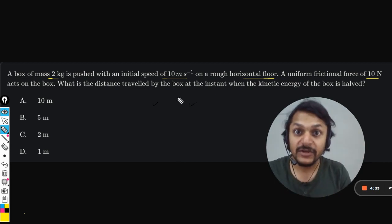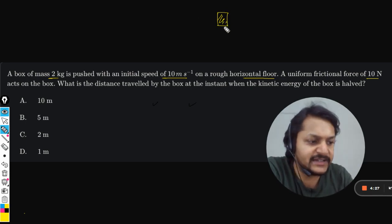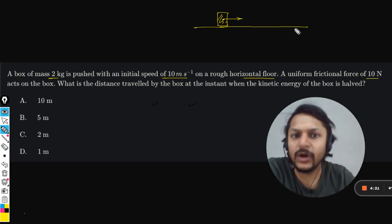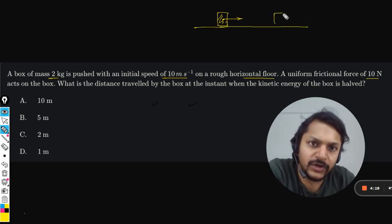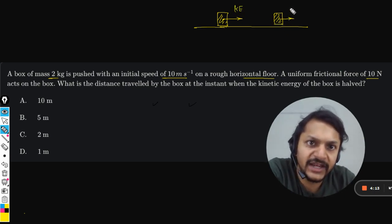So what is happening here? First, this is the block and it is given some initial kinetic energy. This energy does work against friction, so energy is lost. Half of the kinetic energy is available here, the other half is lost somewhere.